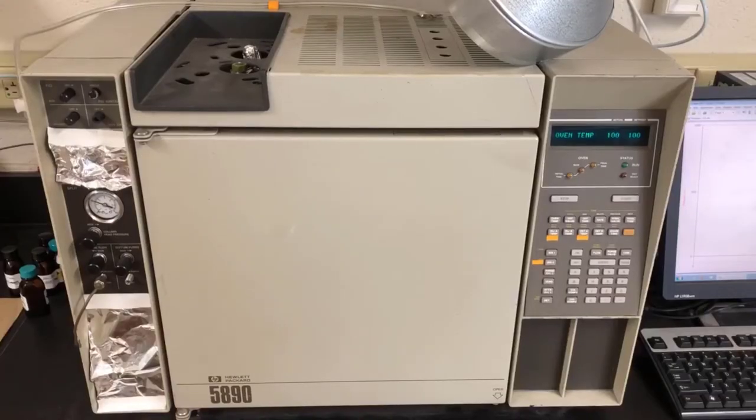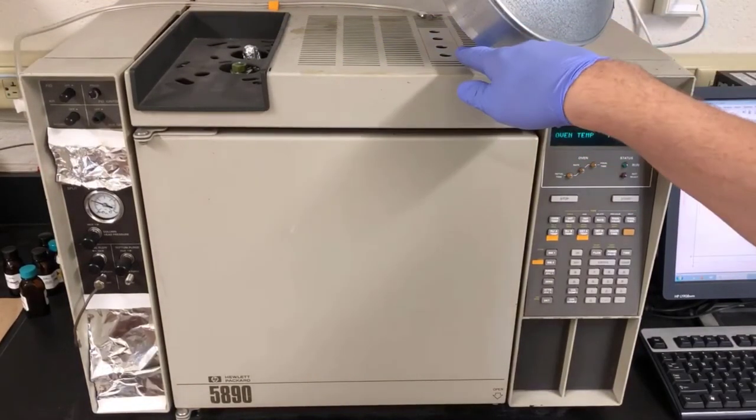This is one of several GCs that we have in the lab. Here are some of the important things to know about it. The injector port is here. Here's the exhaust port. That's where the sample exits. Both of these areas get hot.